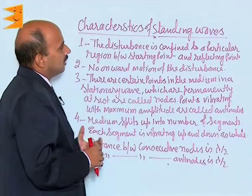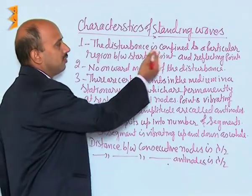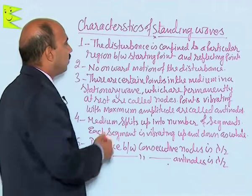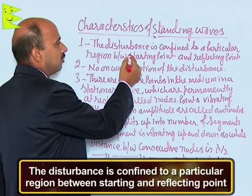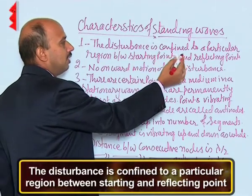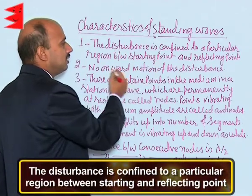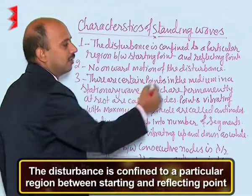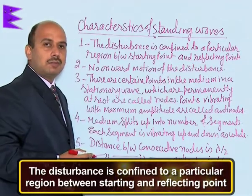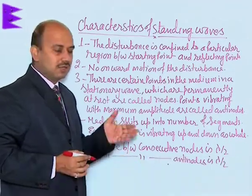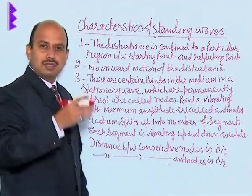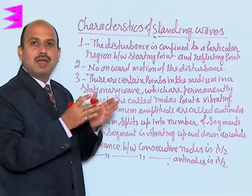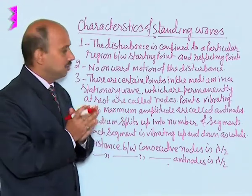Now, see there are certain characteristics of standing waves. The first one is that the disturbances are confined to a particular region between the starting point and the reflecting point. So, if you have taken one starting point and another is a reflecting point, all the disturbances are confined within this region.